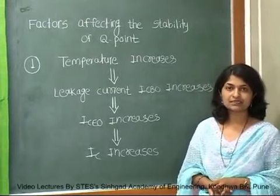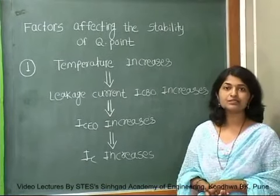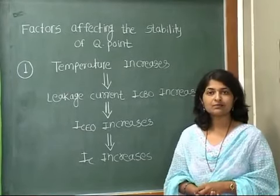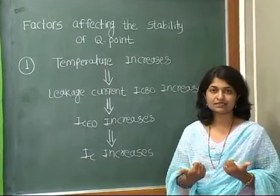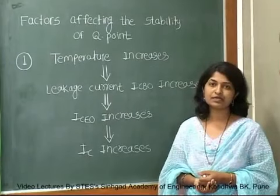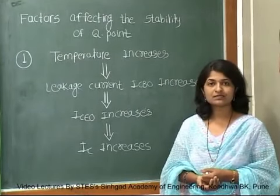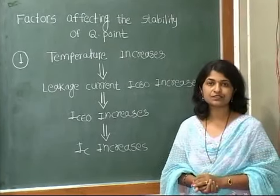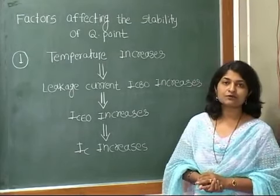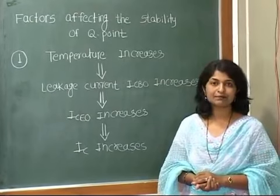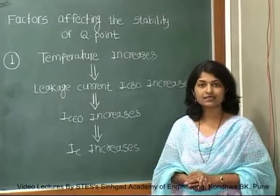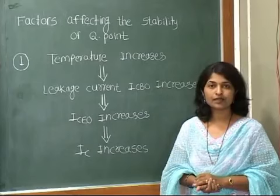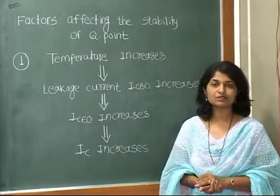The second point is how beta DC affects the stability of the Q point. Beta is the current gain of the transistor, and it changes from one device to another. Even if similar type transistors are used, the beta is different for each. This causes the Q point to move away from the center to the cutoff region or to the saturation region. To avoid the effects of temperature and beta DC on stability, we use the bias stabilization technique — biasing techniques to avoid the effect of different parameters on the Q point.